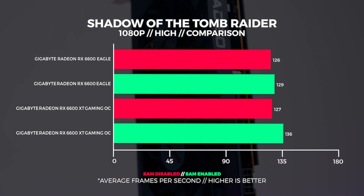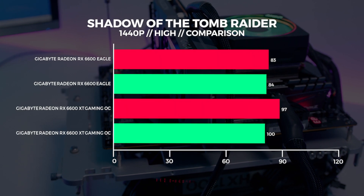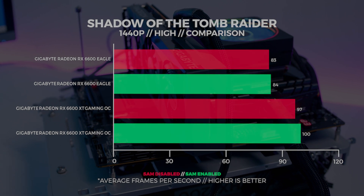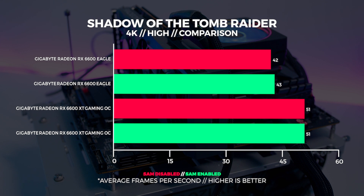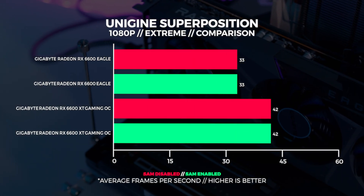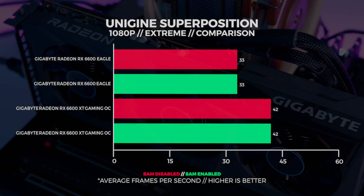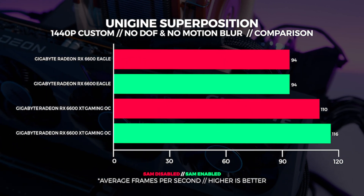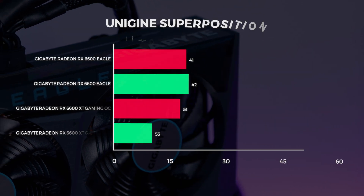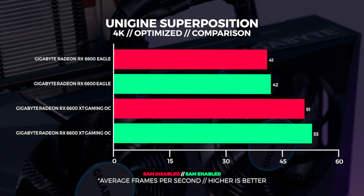At 1080p with Shadow of the Tomb Raider, SAM enabled gave a 3 fps gain on the 6600 but more interestingly a 9 fps gain on the 6600 XT. At 1440p there was only a single frame difference with SAM enabled — pretty negligible. At 4K we saw the same thing with only a single frame difference. In Superposition at 1080p there was no difference whatsoever, which is no surprise since SAM is pretty subjective and doesn't always offer performance uplifts. At 1440p there was much of the same, though the 6600 XT showed a pretty significant uplift. At 4K we only saw a single frame increase — not enough to count as significant.